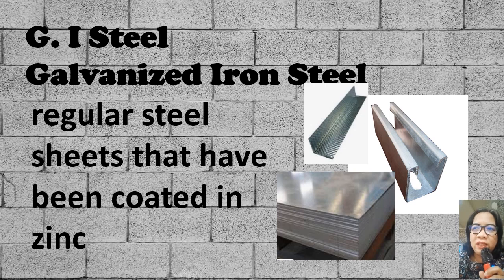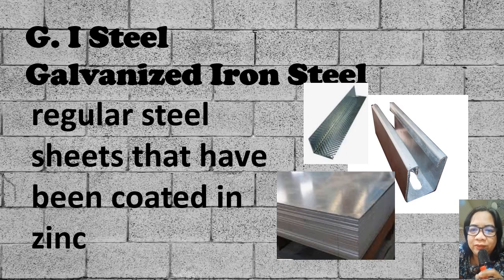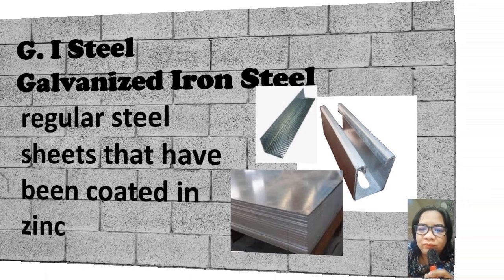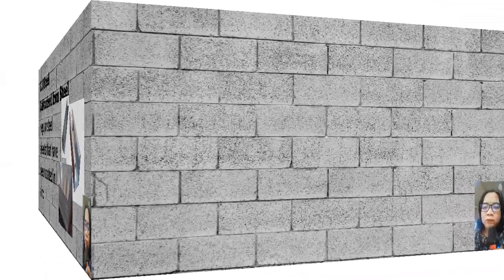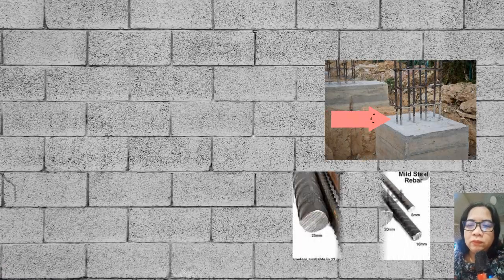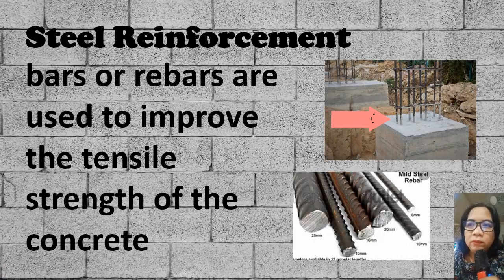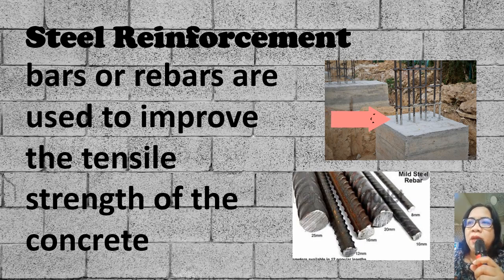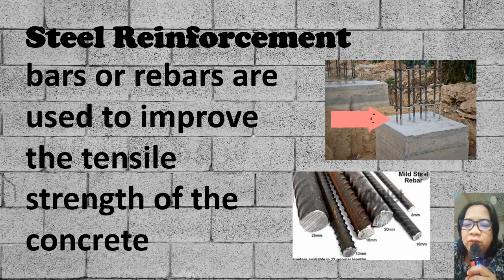G.I. steel, or galvanized iron steel, are regular sheets that have been coated in zinc. G.I. steel reinforcement: G.I. bars or rebars are used to improve the tensile strength of concrete.